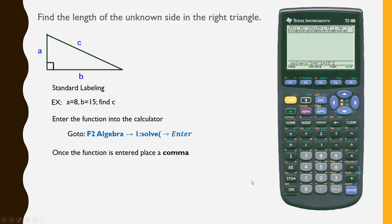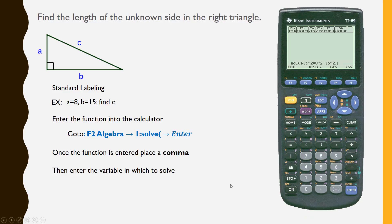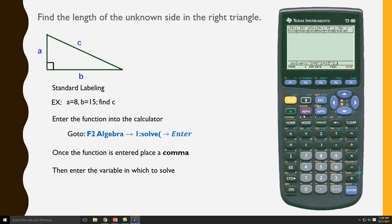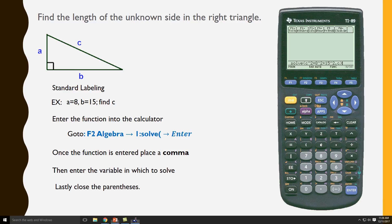Now that the function is entered, I will place a comma. Then I'm going to enter the variable in which I want to solve. In this case we are asked to find C, so I will hit alpha and locate C. Lastly we will close off the parenthesis and now we will press enter.